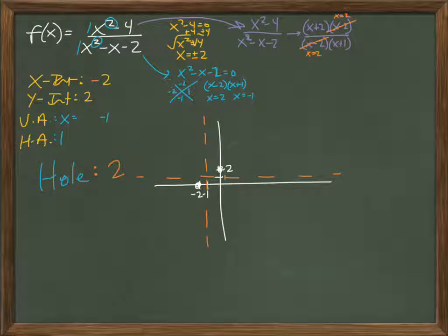And we use the number line trick here to determine what part goes where. So, the only true x-values here, my x-intercept is negative 2. And my vertical asymptote at negative 1.